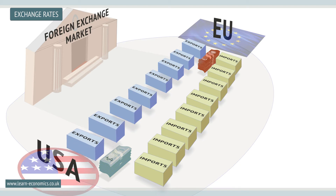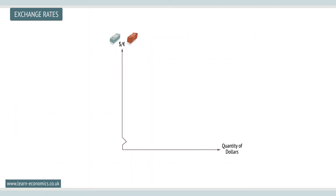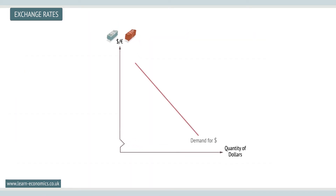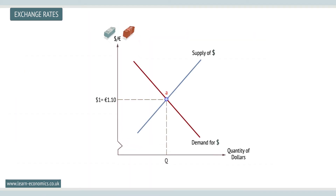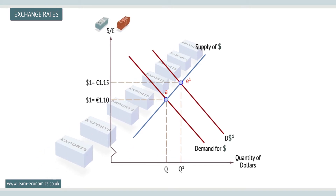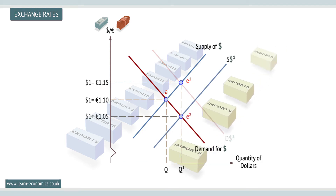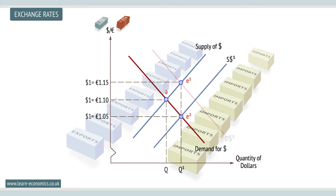For example, rates are pushed up when demand for a national currency rises as their exports or investment opportunities become more popular abroad. Rates are pushed down when the reverse happens, and they import more from abroad or invest more in other countries.